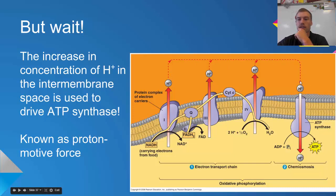The hydrogen is going to be allowed to move back across because diffusion wants to occur from areas of high to low pressure. But the only place that it can move back into the matrix is through ATP synthase.